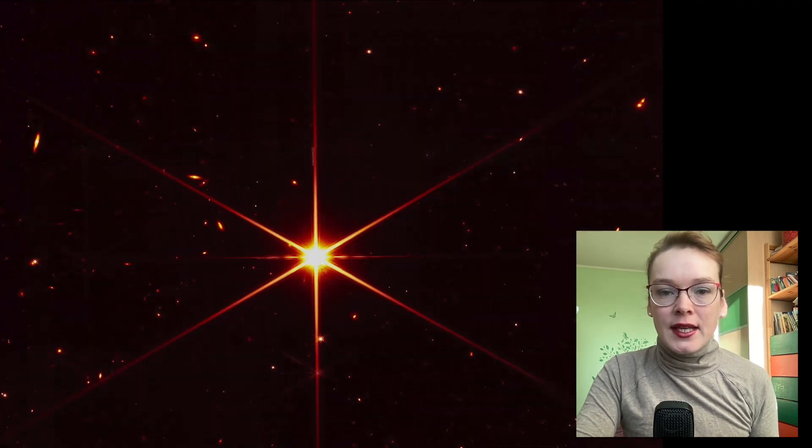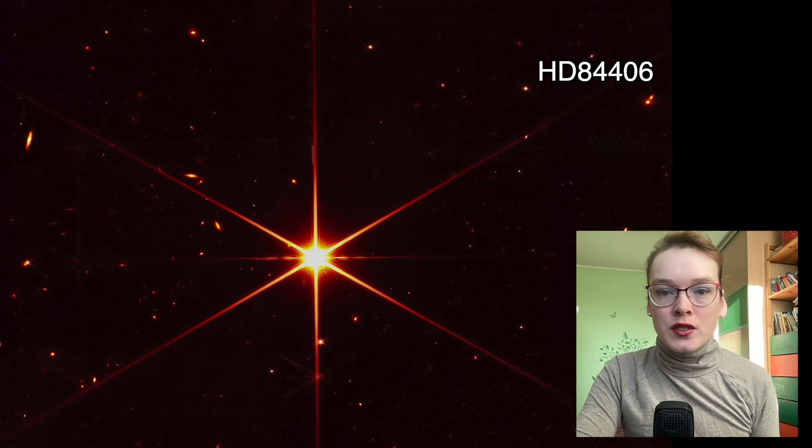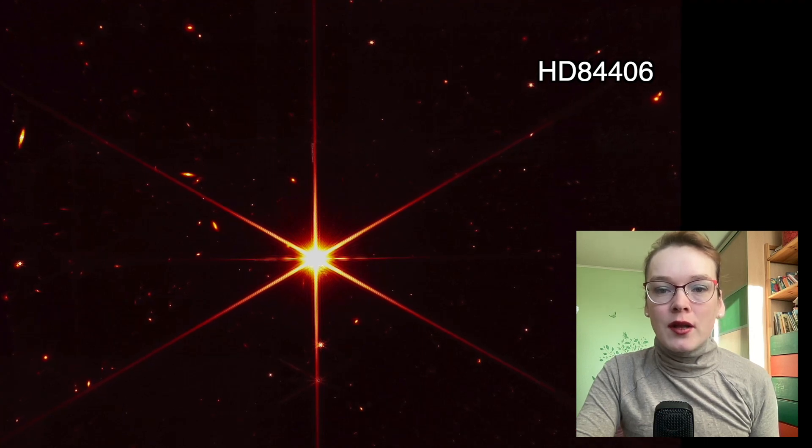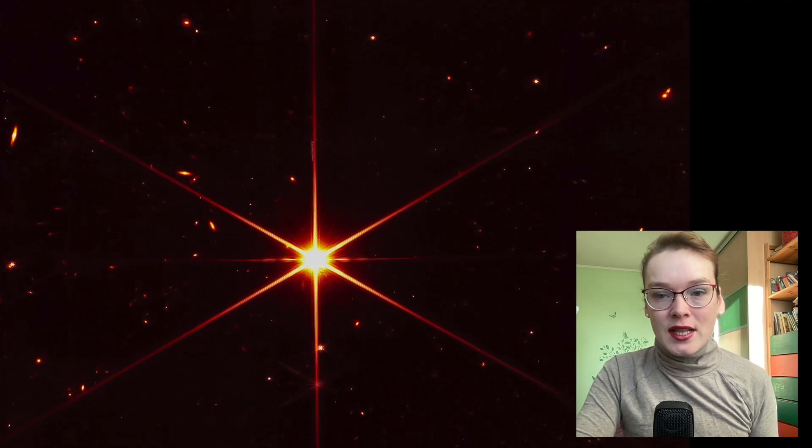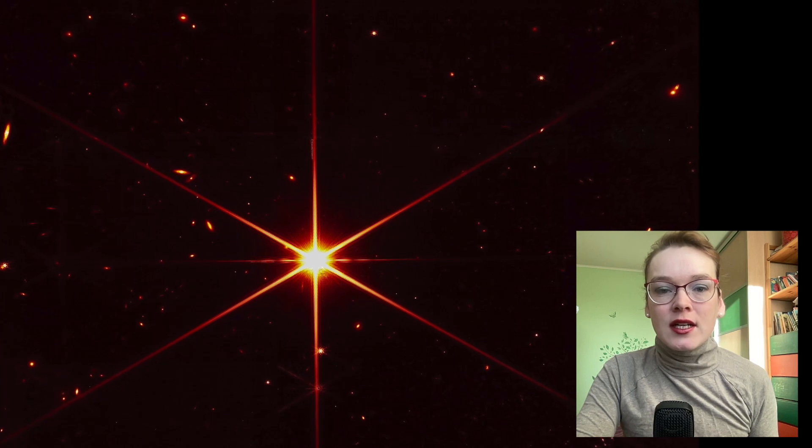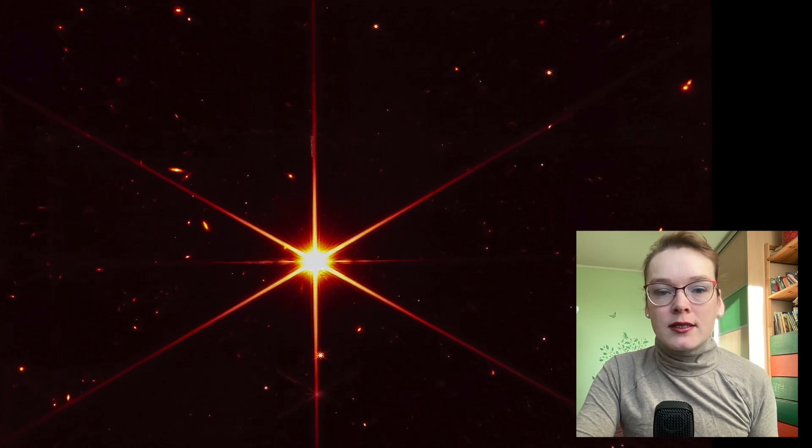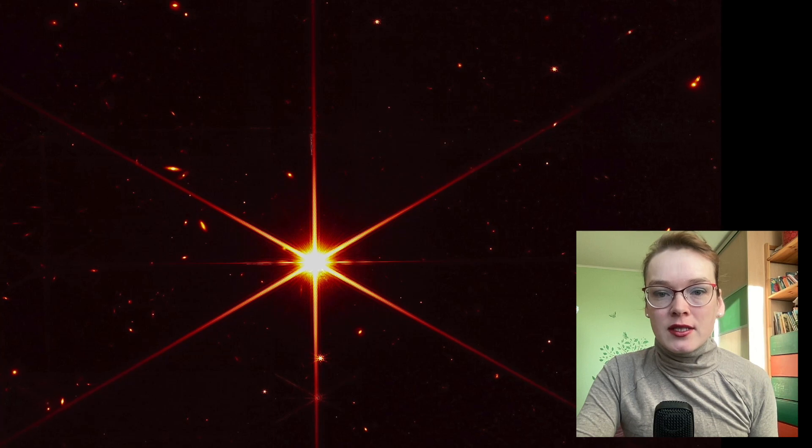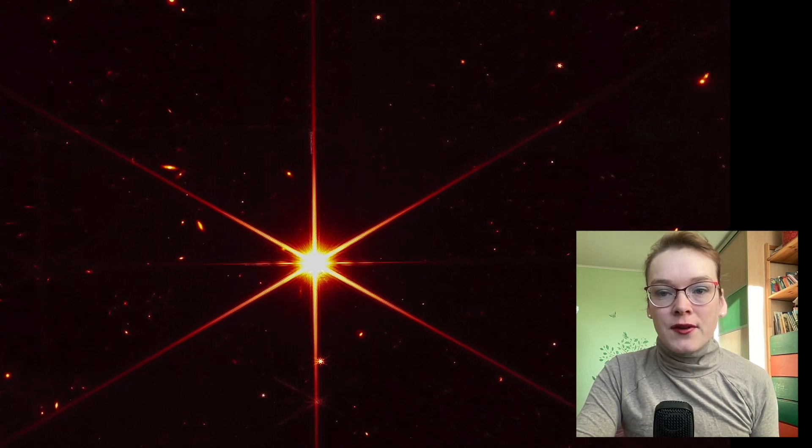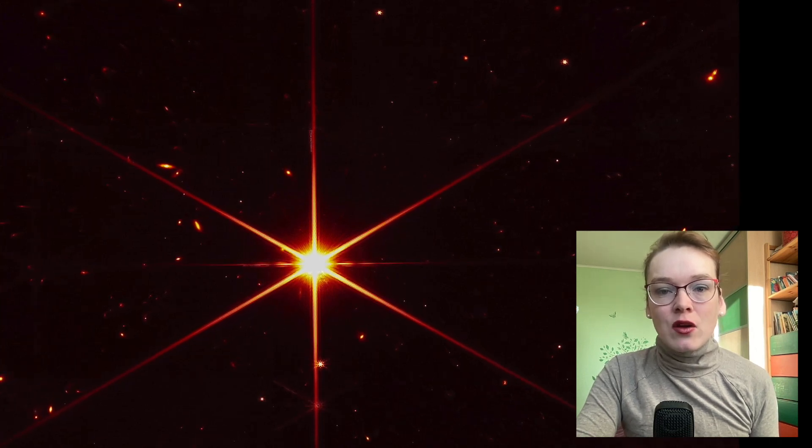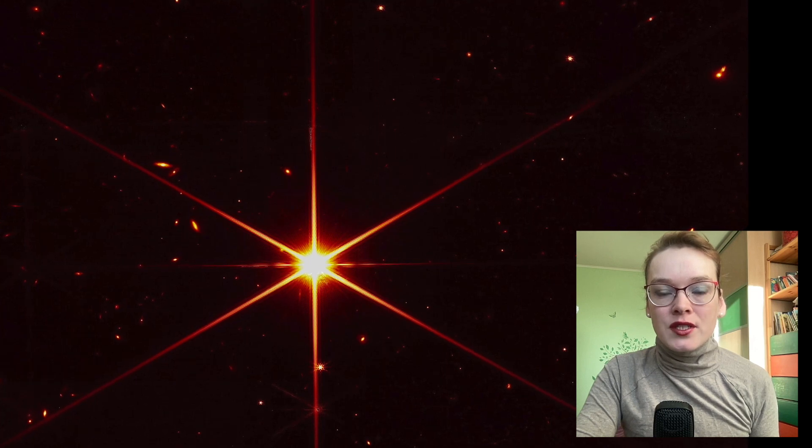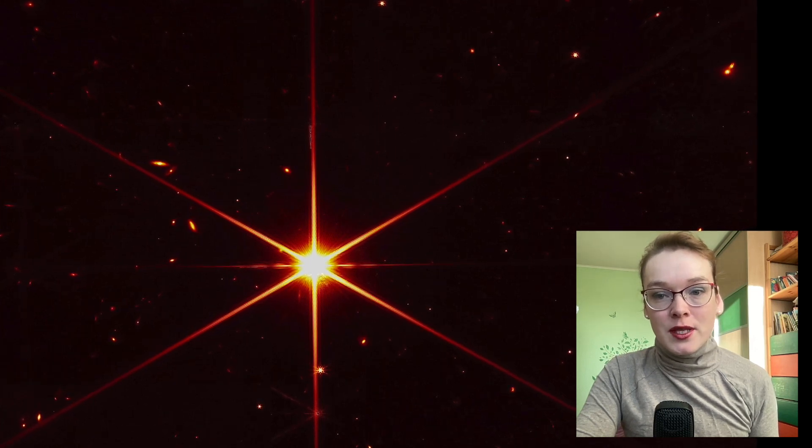The bright sun-like star HD 84406, located 260 light-years from the Sun, was chosen as a test target for aligning the optical system. The star in the image has six spikes, which are nothing more than diffraction spikes caused by the scattering of light on the supports of the secondary mirror of the James Webb Telescope.